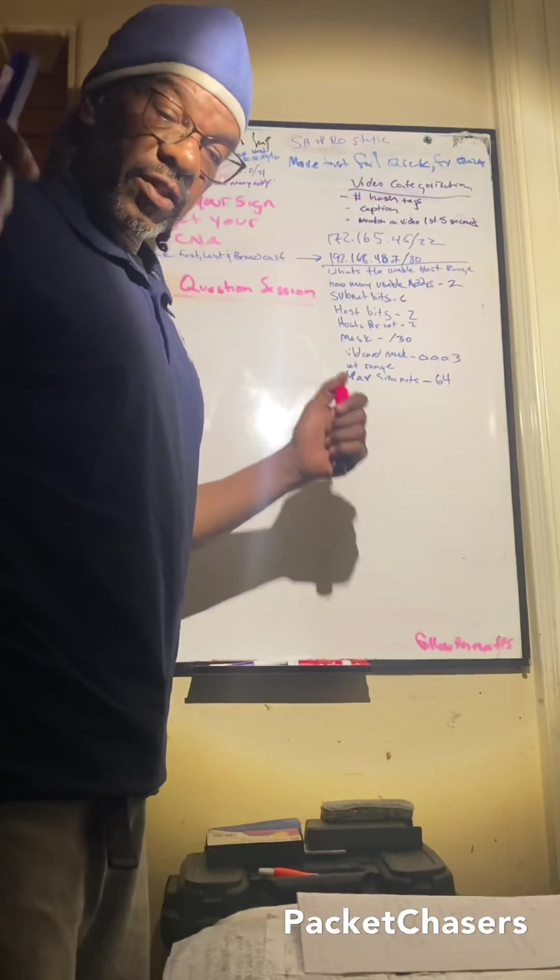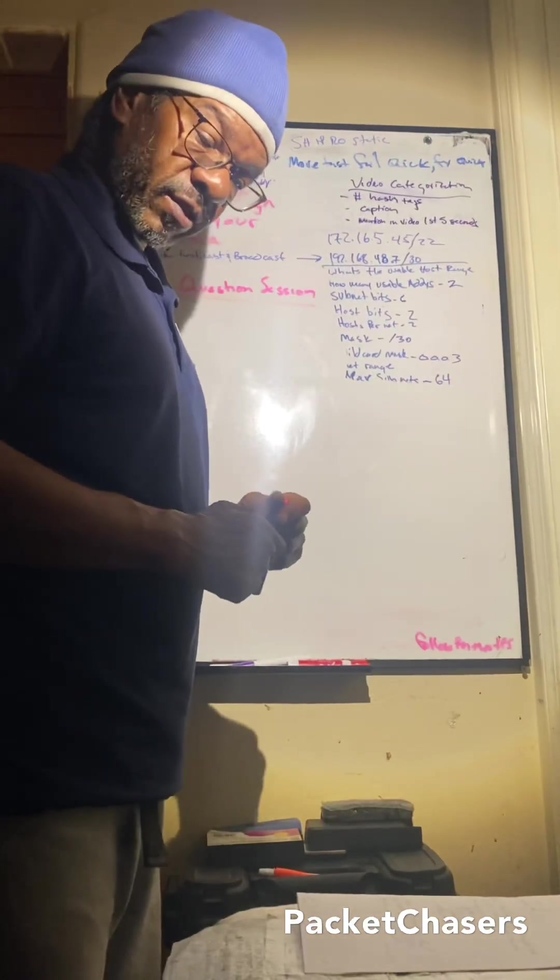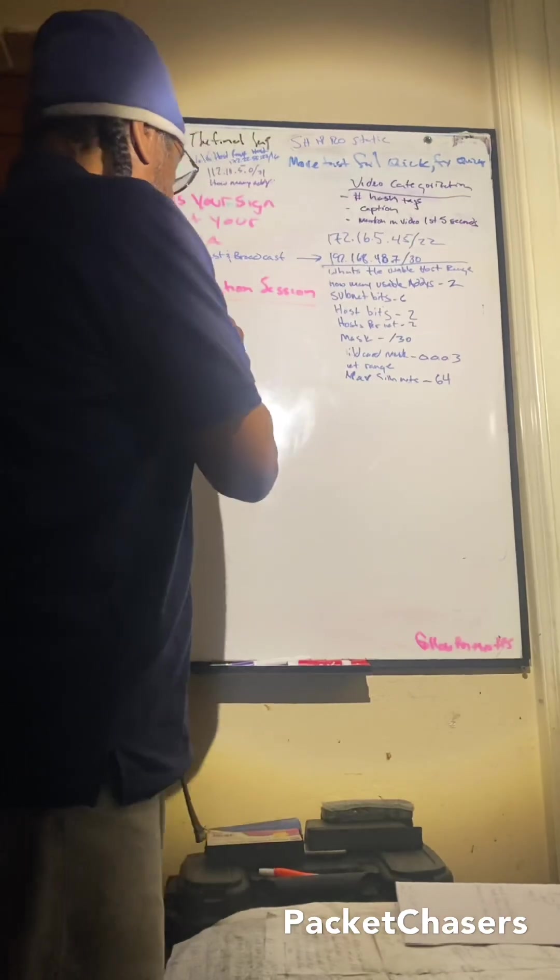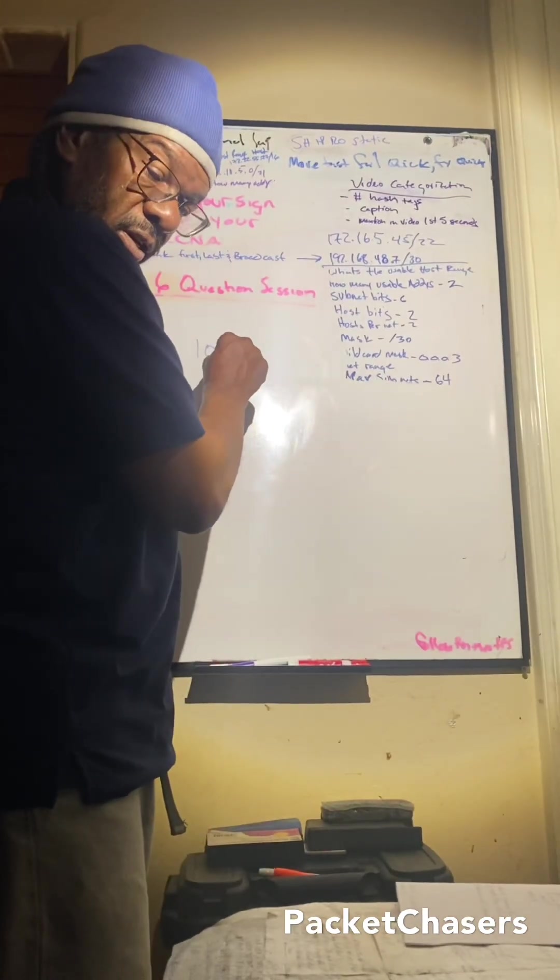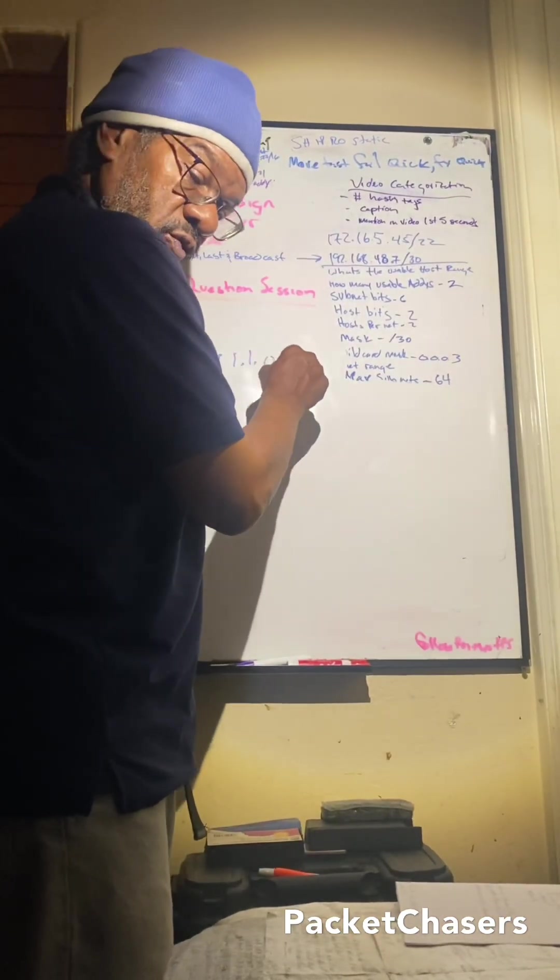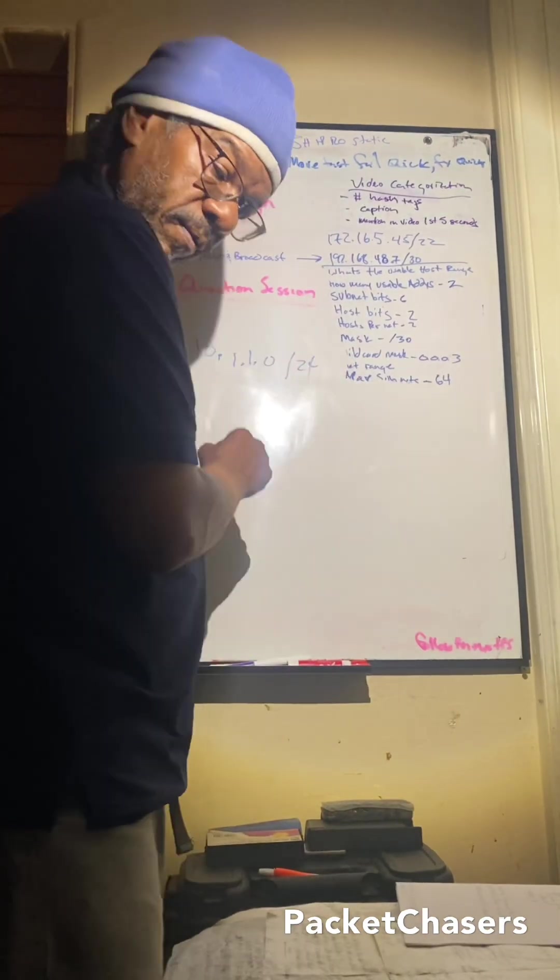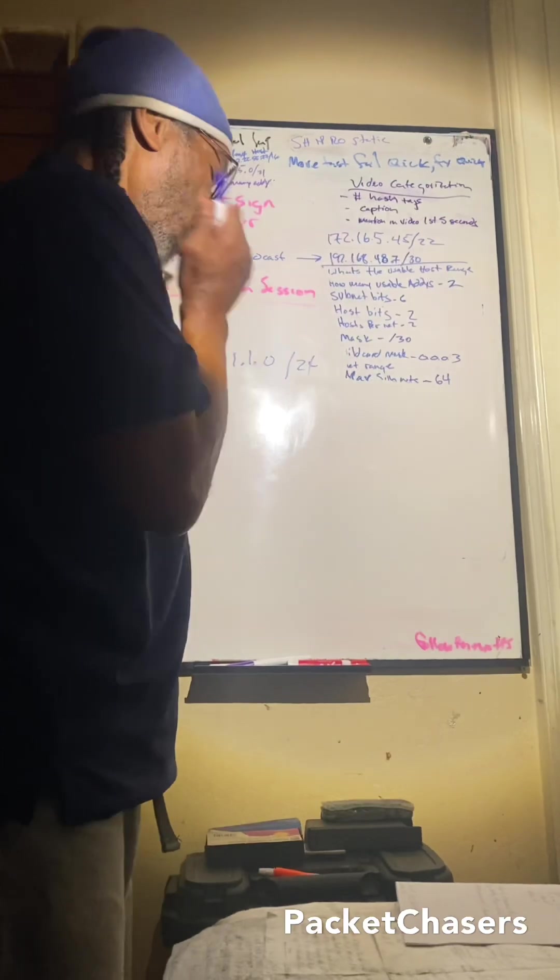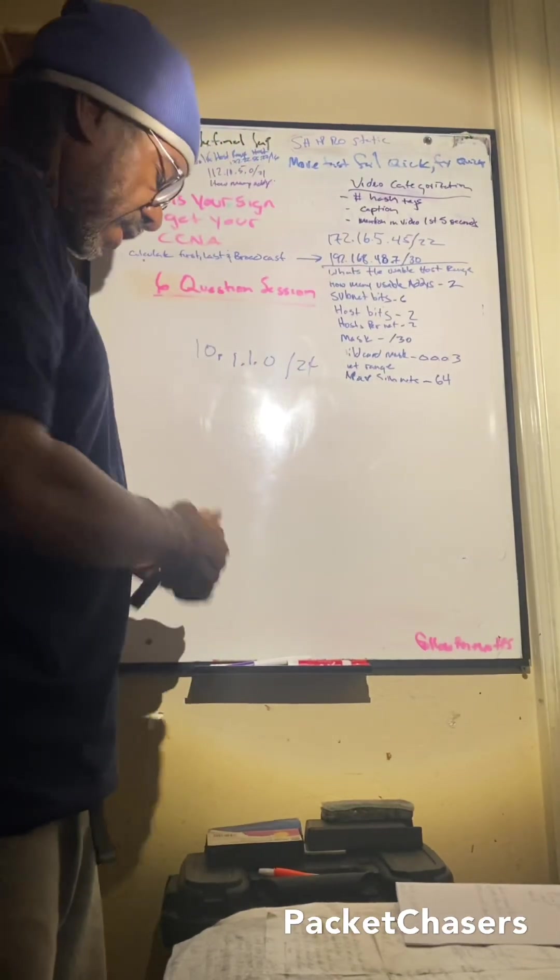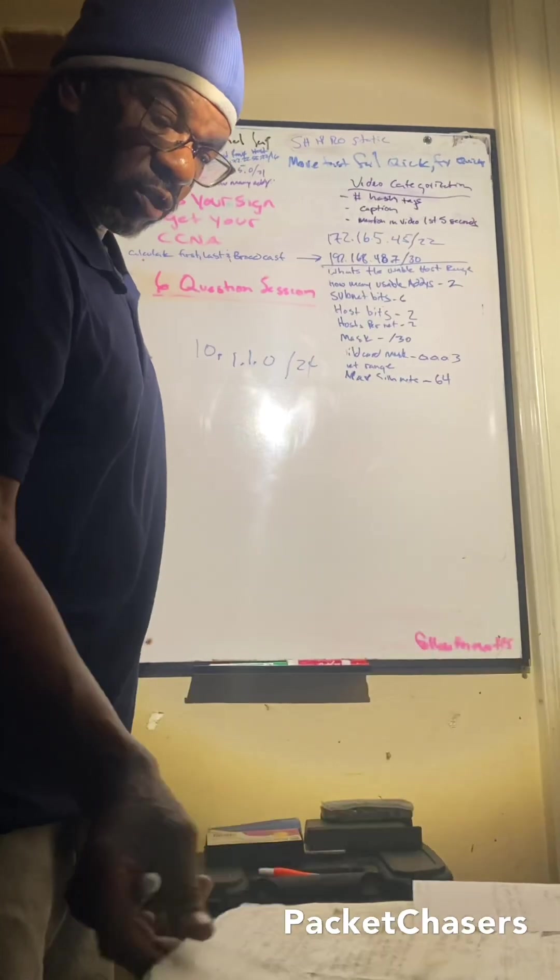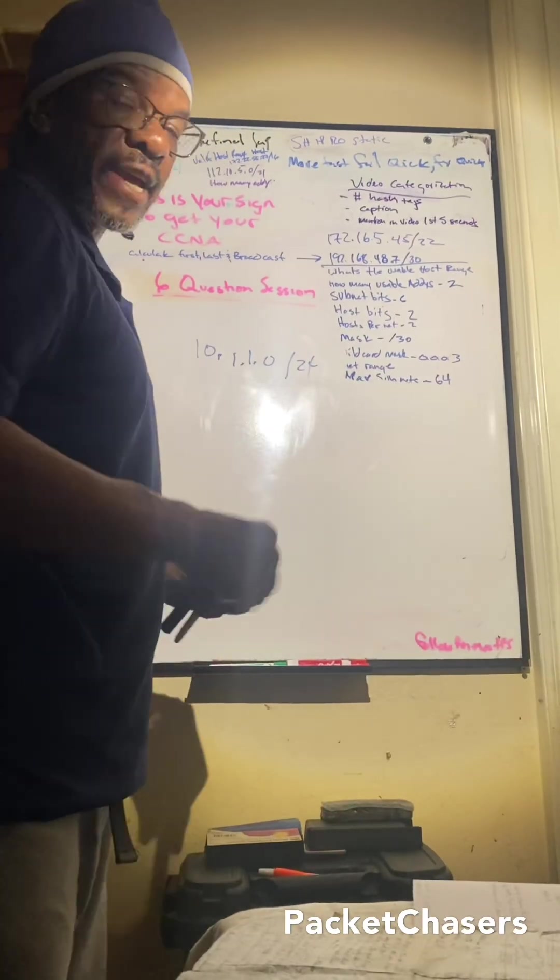Configure a standard access list that allows traffic from the 10.1.1.0/24 network. Alright, I'm gonna go back to the handy dandy packet chaser chart for the access list.